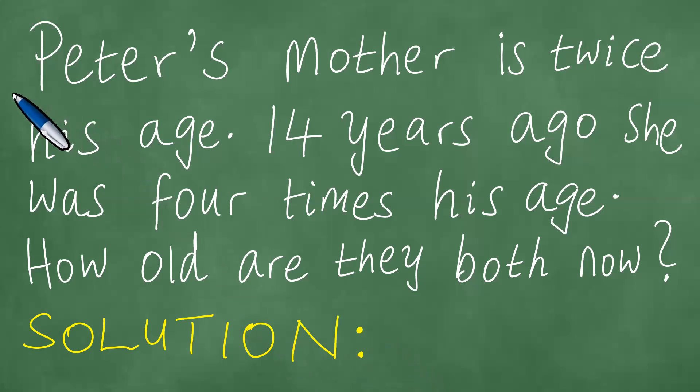We are looking at this question in front of us. Peter's mother is twice his age. 14 years ago she was four times his age. How old are they both now? We're interested in knowing the age of Peter and the age of Peter's mother as well.